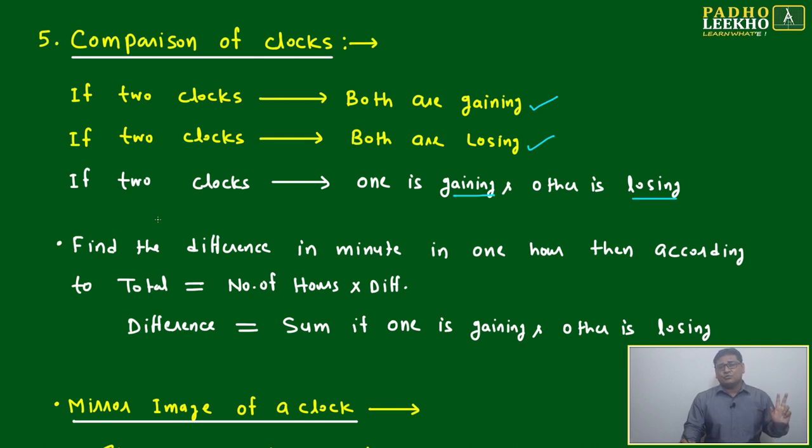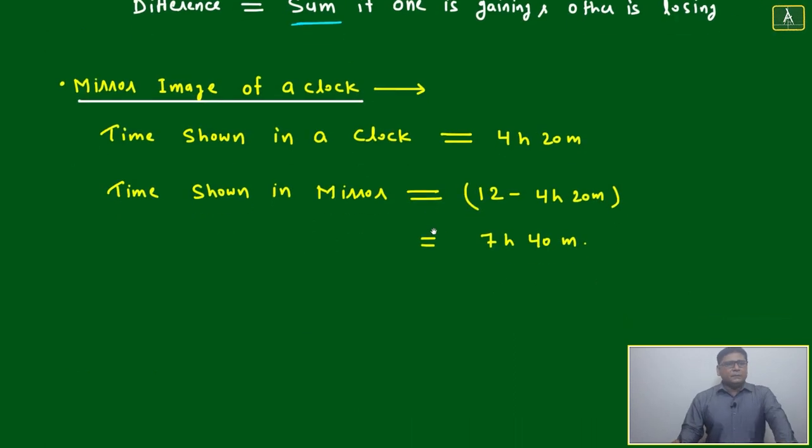Find the difference in minute in one hour, then according to total number of hours times difference, difference will be sum. If one is gaining and other is losing, one is in plus, one is in minus. If you will take the difference, what will happen? Minus will convert into plus, means directly you take positive. If both are gaining, both are losing, take the difference.